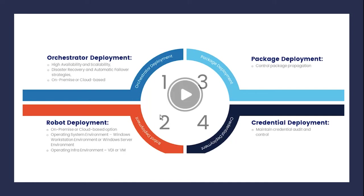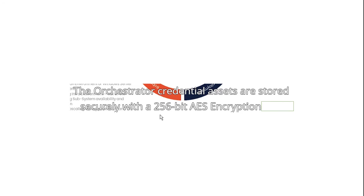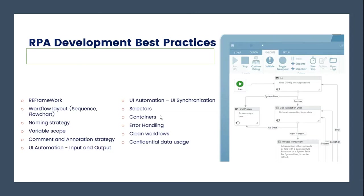There are four levels of deployment components: Orchestrator deployment, Robot deployment, Package deployment, and Credential deployment. Orchestrator deployment includes disaster recovery and may be cloud-based. Robot deployment depends on the operating system — Windows or Linux. Package deployment is about control package propagation. Credential deployment always includes audit and control, and credential assets are stored securely with 256-bit AES encryption.